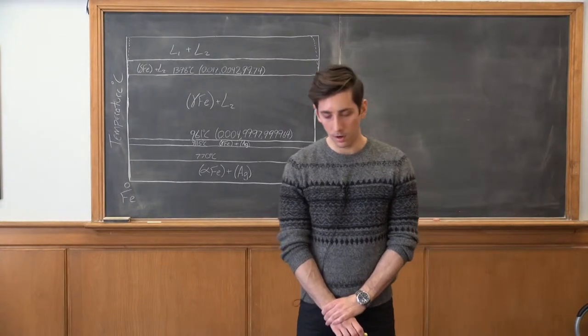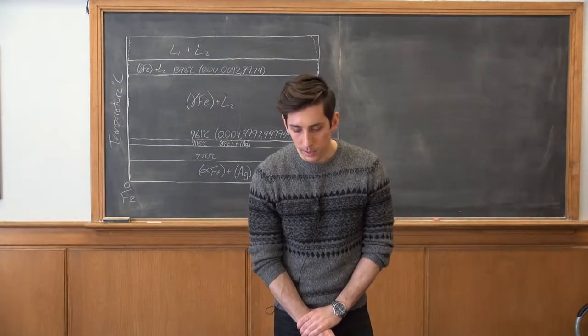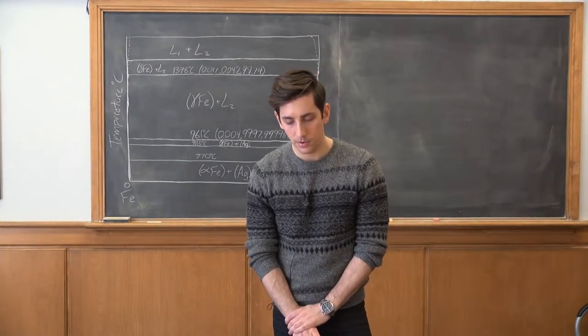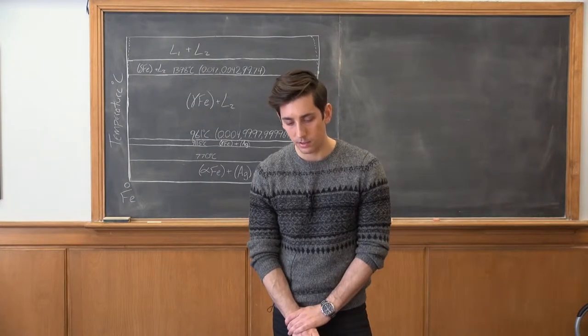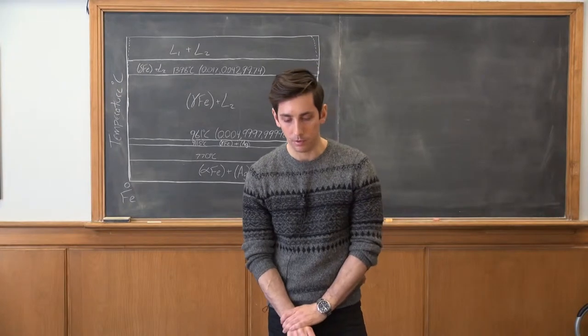So this is problem 4 and it reads, referring to the silver iron phase diagram, if 20 grams of silver was added to 80 grams of iron at 1600 degrees Celsius and then cooled to 1200 degrees Celsius, how many grams of liquid would be present?